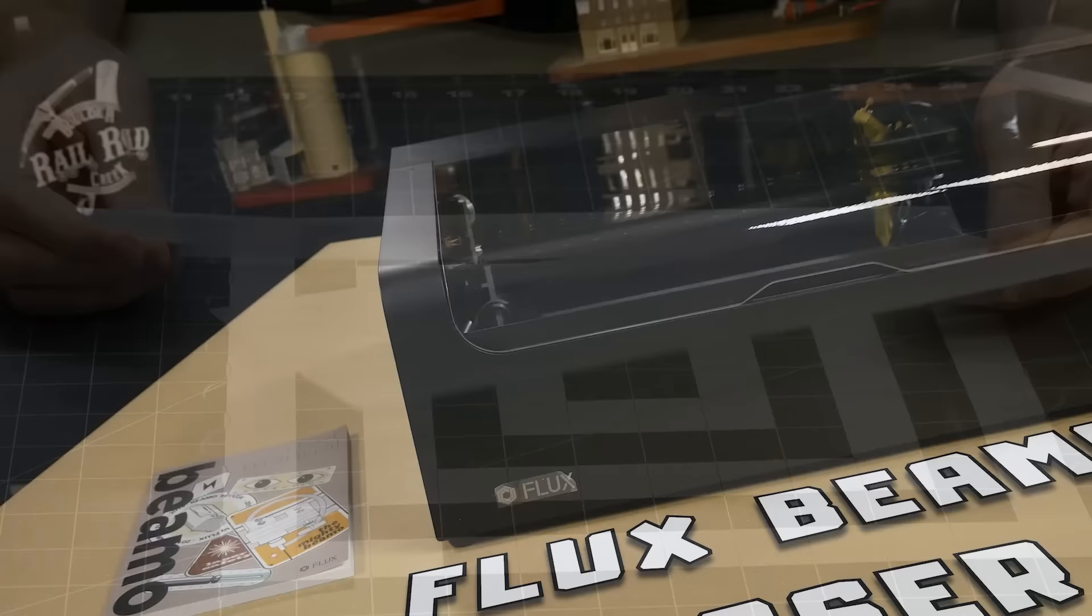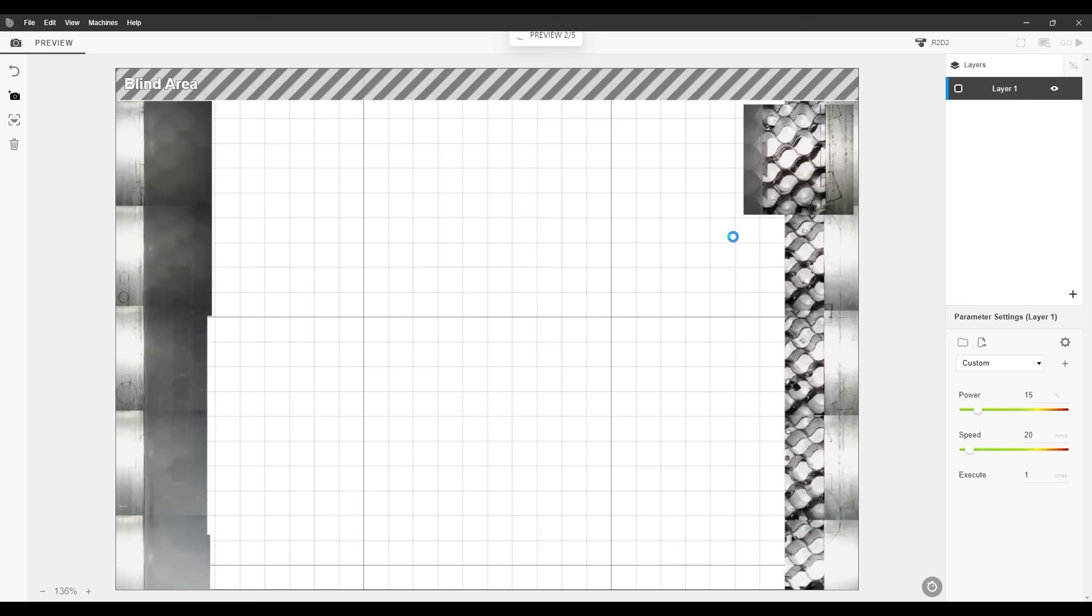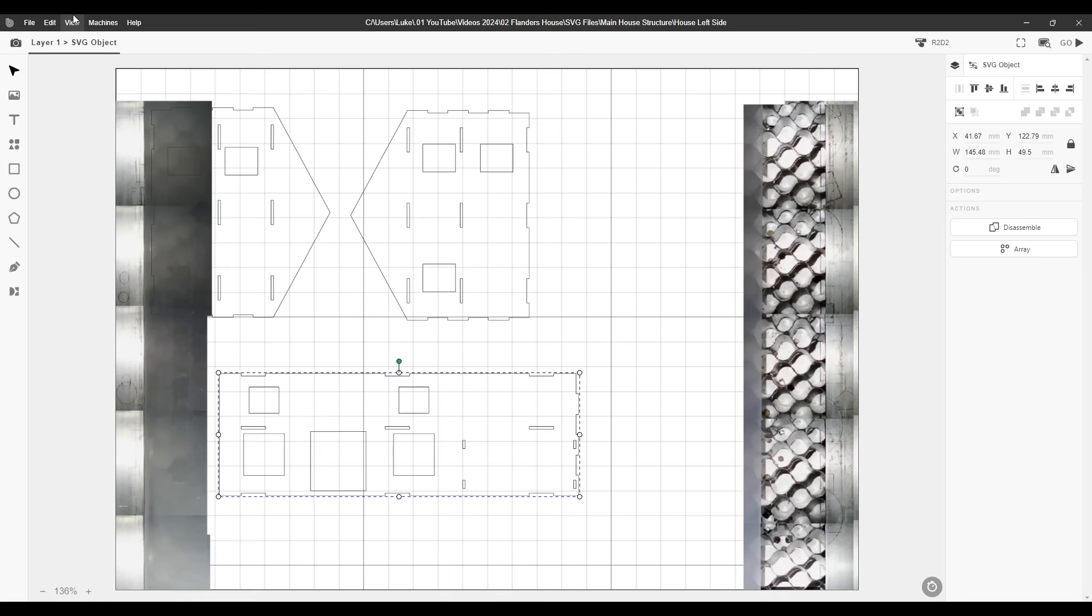The laser for this project is the Beemo 30W CO2 laser. With the beam studio app open I can take an image of the work surface. I only need to see the two edges knowing that the middle is entirely covered by the one millimeter acrylic.